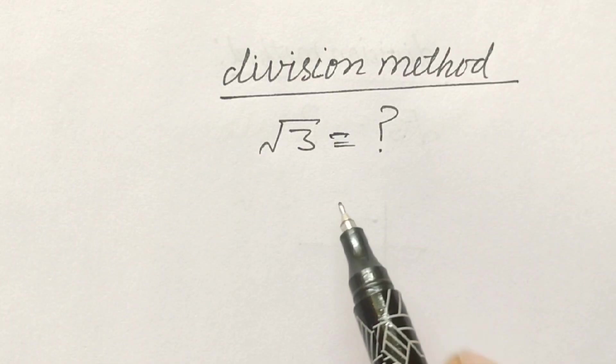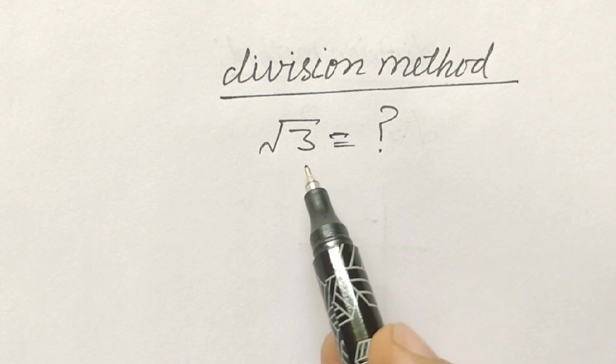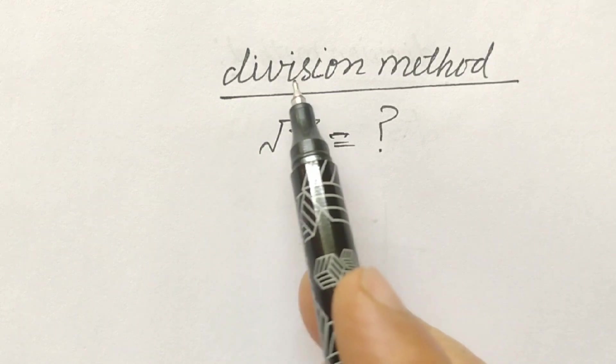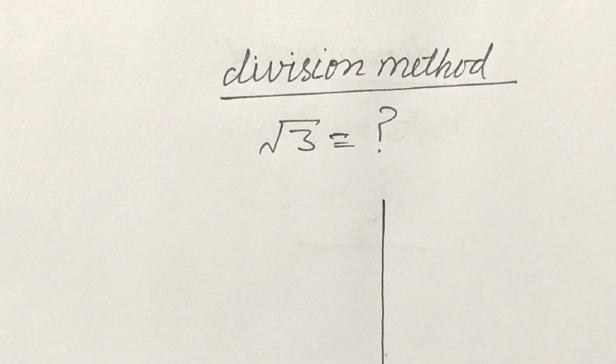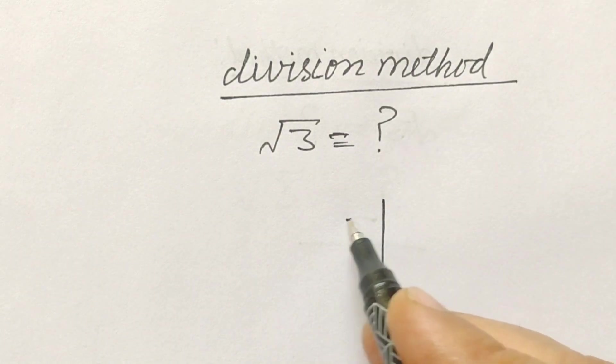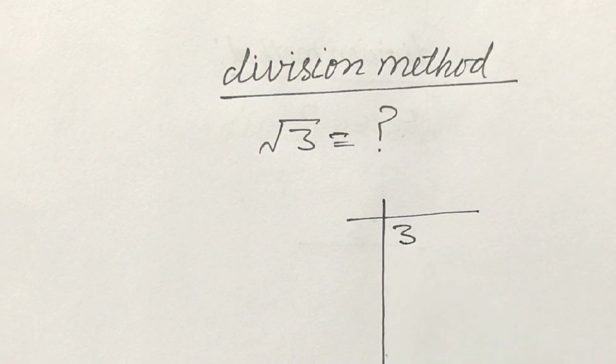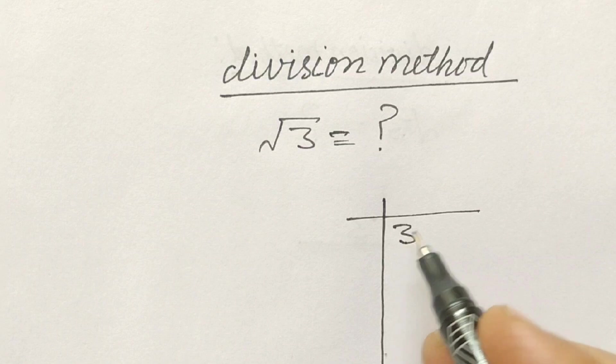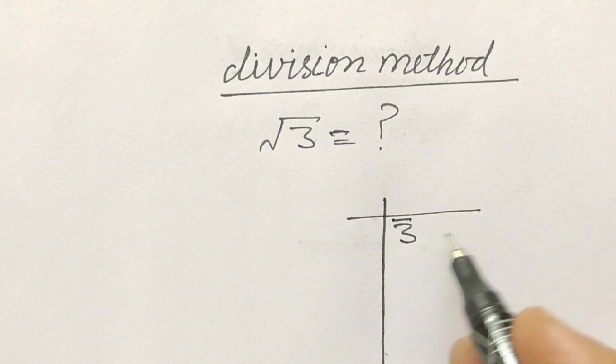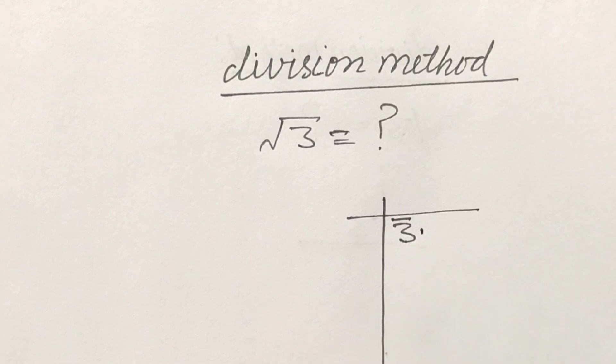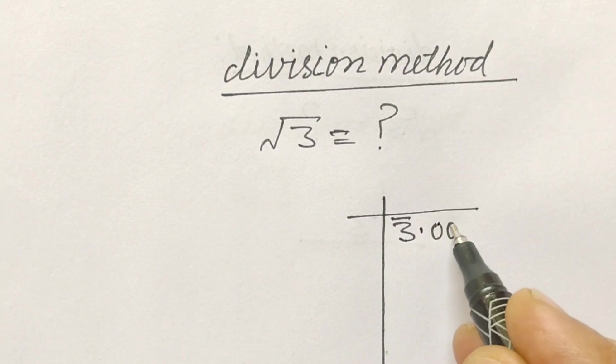Hi friends, we have to find out the value of square root of 3 using division method. Let's start. We will write first 3, this is unpaired. Now we will make a point and add 0 with pair.